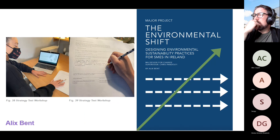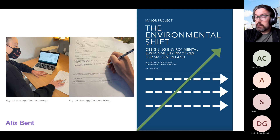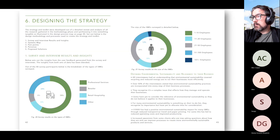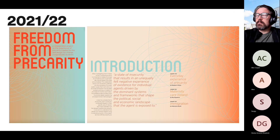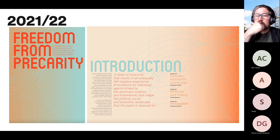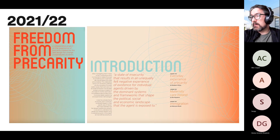Alex's project — very neat, in the field of strategy — looked at how smaller companies can begin to employ sustainable practices in their business models. She got a job as a consultant in London straight out of the program; her background was landscape architecture. The 2021-22 group project explored the theme of precarity in different contexts, a theme we anticipate running for about five years.